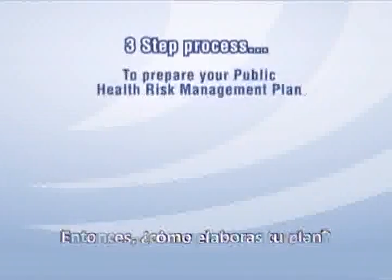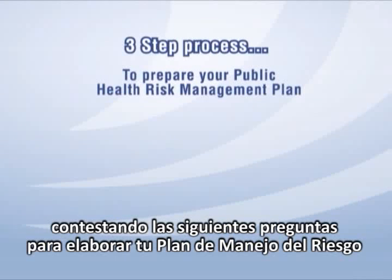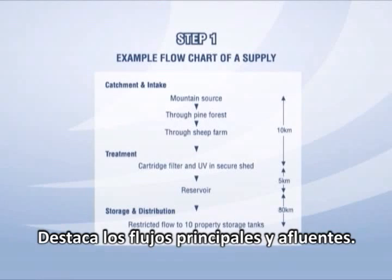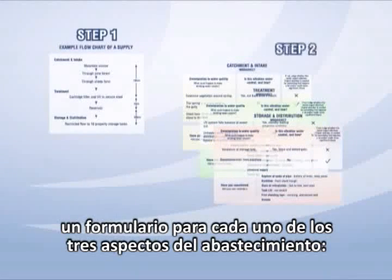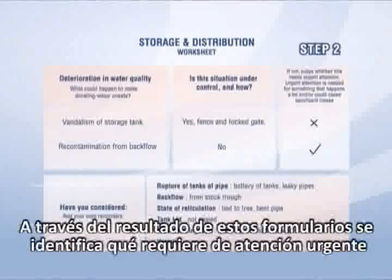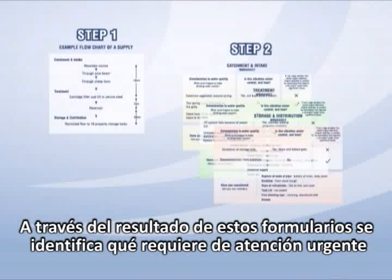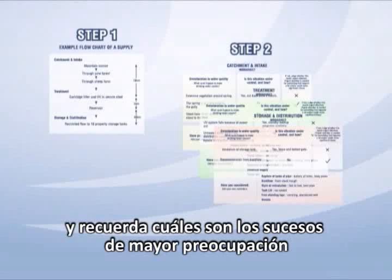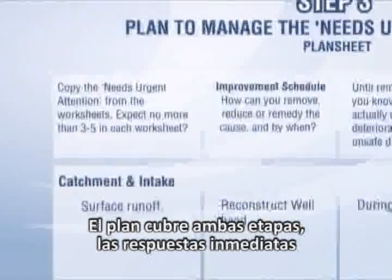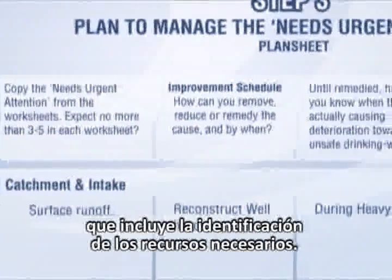So, how do you prepare the plan? This guide will take you through a 3-step process following these questions to prepare your supply's public health risk management plan. Step 1 is a simple drawing of your water supply — it highlights the major flows and influences. Step 2 mirrors the drawing, with one worksheet for each of the three aspects of the supply: Catchment and intake, Treatment, and Storage and distribution. The result of these worksheets is identification of what needs urgent attention, which are the events of most concern. Step 3 focuses on the issues that need urgent attention and develops a plan to manage these, covering both immediate responses and a longer-term improvement schedule, including identifying the resources you need.